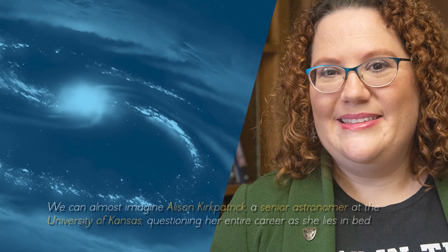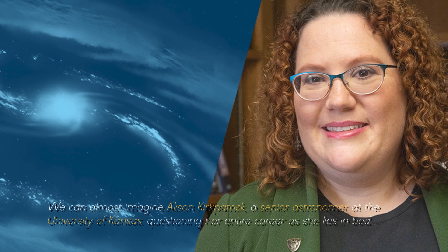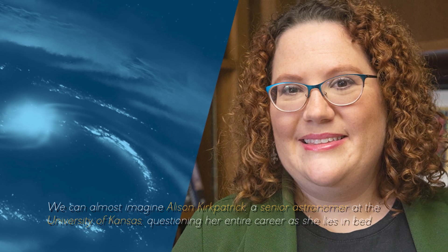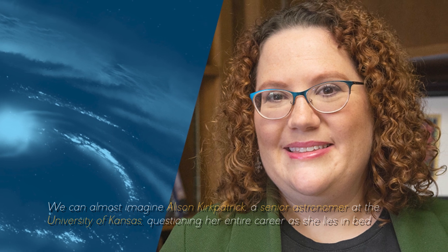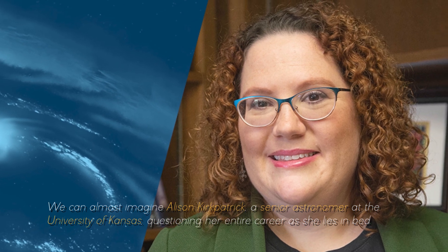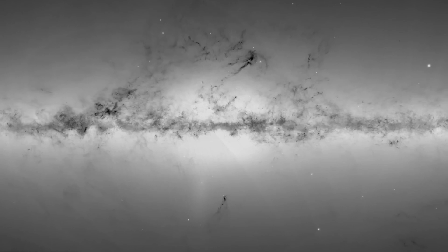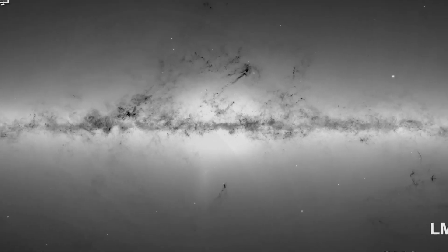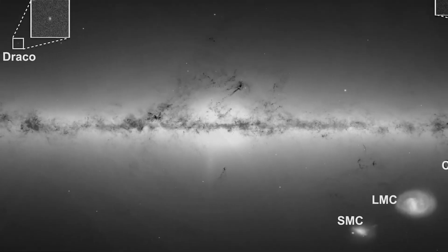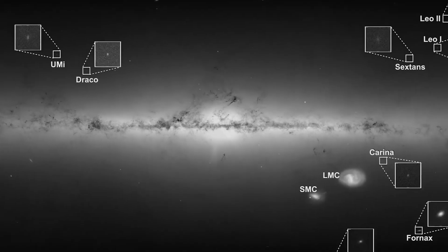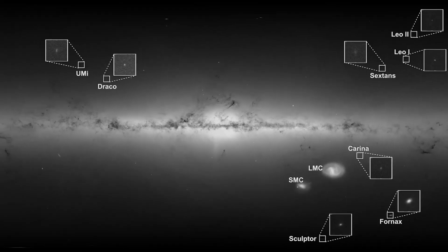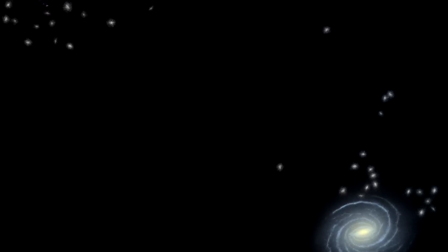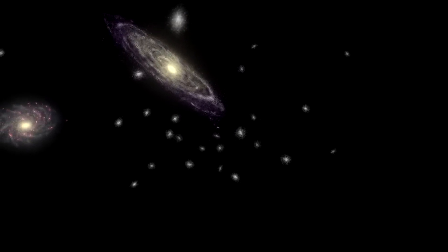We can almost imagine Alison Kickpatrick, a senior astronomer at the University of Kansas, questioning her entire career as she lies in bed. Why so much surprise? The reason for this bewilderment lies in the fact that galaxies captured by the James Webb do not behave according to what the Big Bang hypothesis would predict. They are too small, excessively uniform, and appear to be at an age incompatible with this theory.